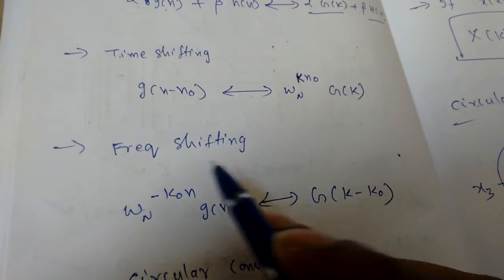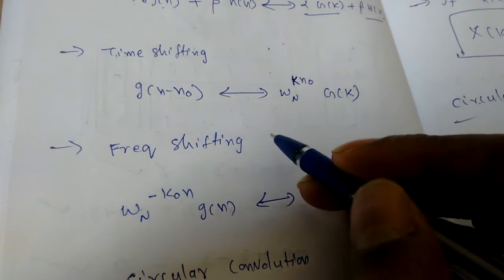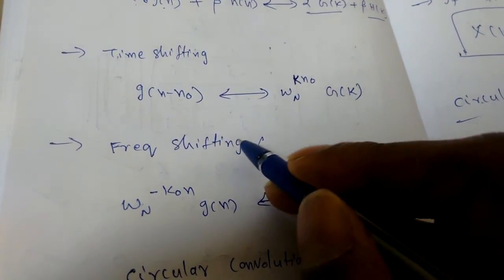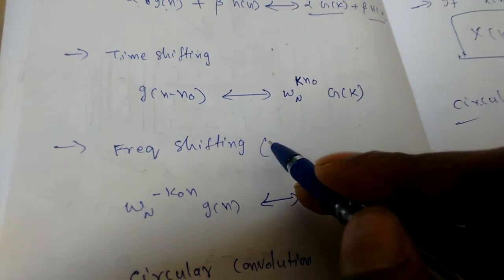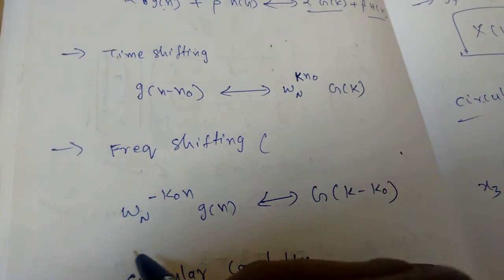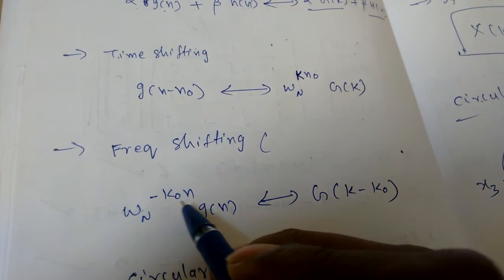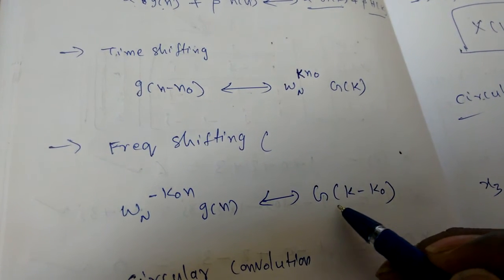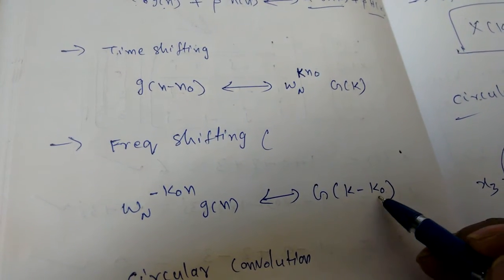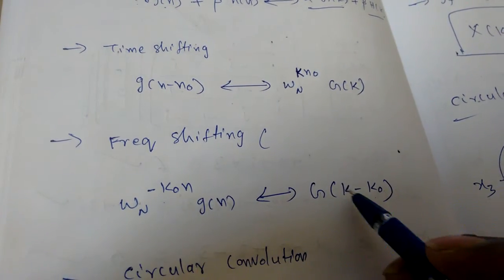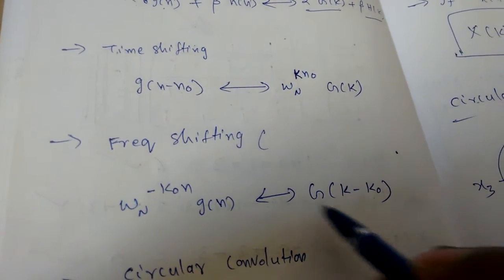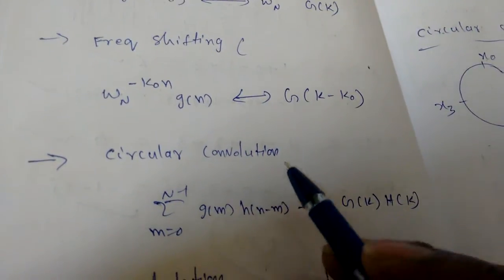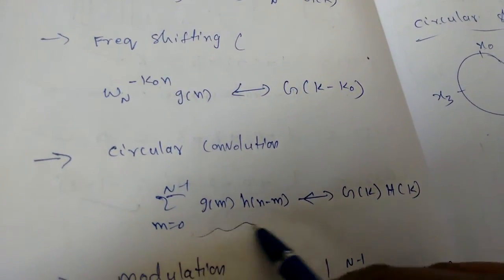The next property is frequency shifting — more precisely DFT shifting. If W_N^(-K₀·n) · G(n) is the input, the DFT is G(K - K₀). Notice the minus-minus relationship in the DFT domain.